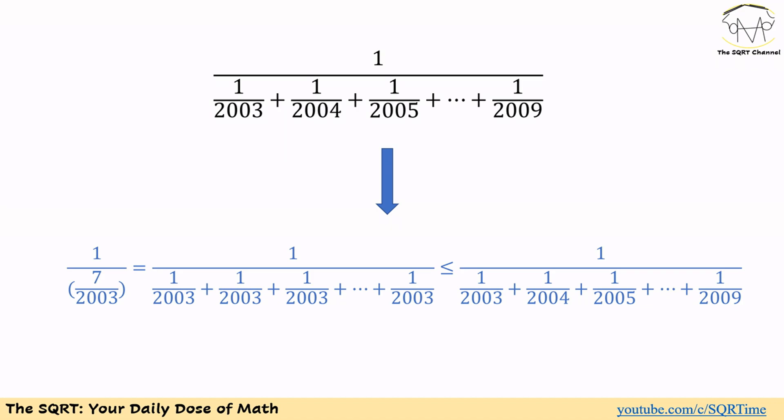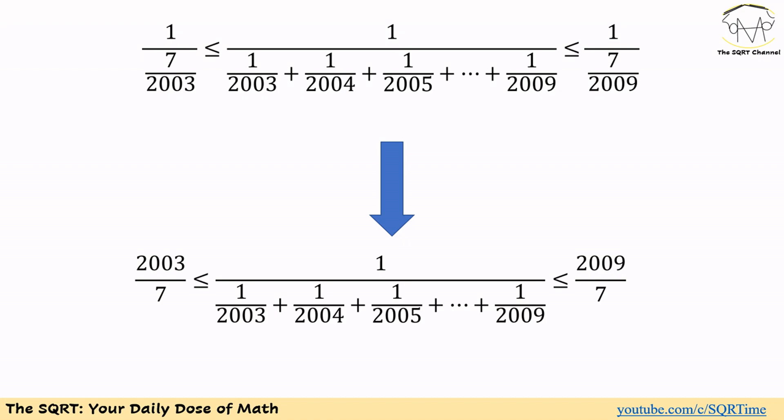We are going to apply the same trick, but instead of using 1 over 2009 we are going to use 1 over 2003. This way we can find a lower bound for the whole expression. If we do so, then 1 over 7/2003 is going to be the lower bound for 1 over (1/2003 + 1/2004 + ... + 1/2009). So the initial expression is between two terms: greater than or equal to 1 over 7/2003, and less than or equal to 1 over 7/2009.